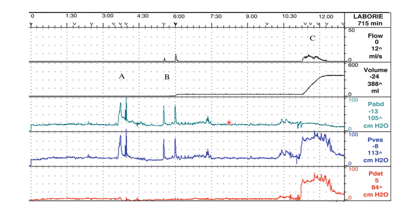This slide again shows a normal urodynamic graph. The flow line, volume line, filling phase, and micturition phase are visible. The abdominal pressure and vesical pressure lines are shown. Whenever abdominal pressure rises, vesical pressure rises simultaneously as well. During the filling phase, there is a slight rise in vesical pressure, which is normal. However, this should not result in leaking.